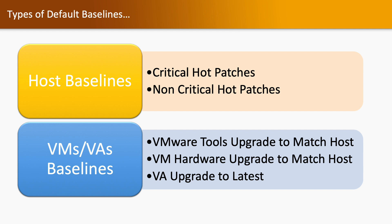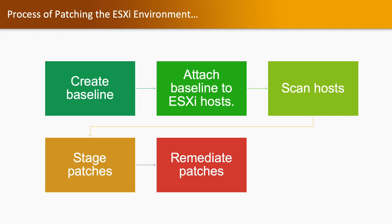There are two types of default baselines: host baselines and virtual machines and virtual appliances baselines. Host baselines contain patches related to the ESXi host, including critical and non-critical patches. Virtual machine and virtual appliance baselines contain patches related to virtual machine tools, virtual machine hardware, and virtual appliances.